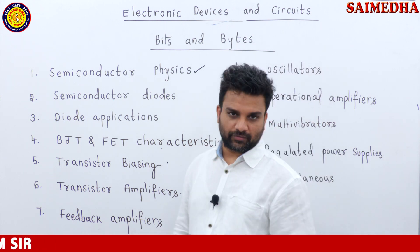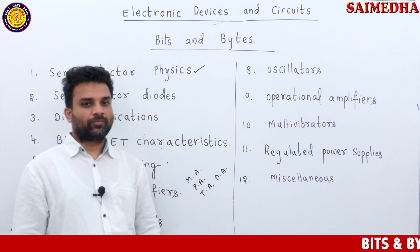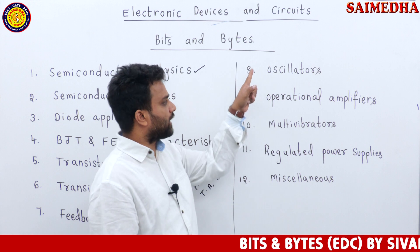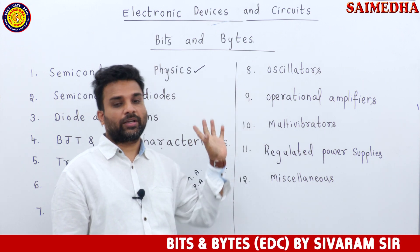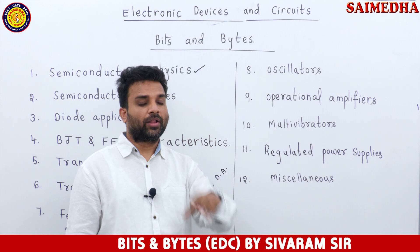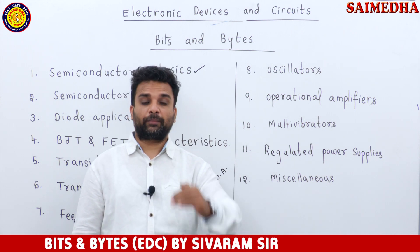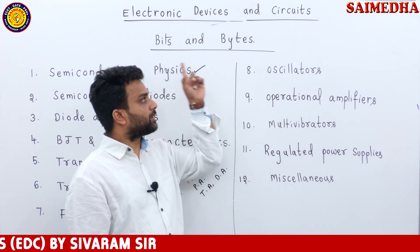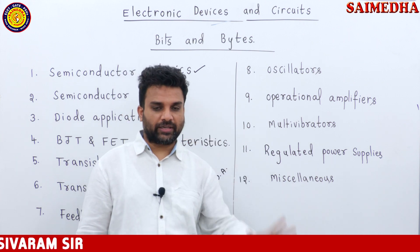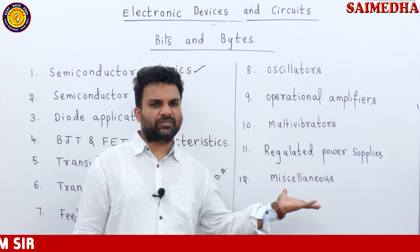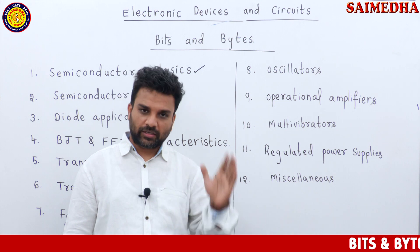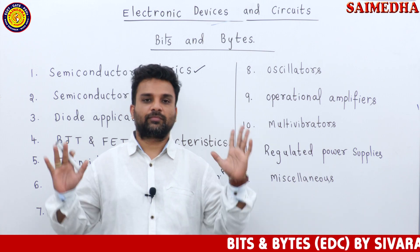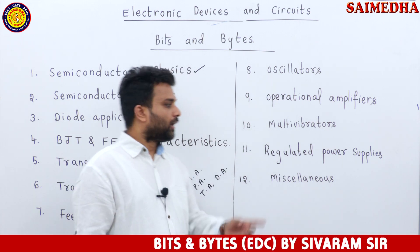Once feedback amplifiers are done, Unit 8 covers oscillators. Feedback amplifiers use negative feedback, while oscillators use positive feedback — there are many applications and this is very important content at diploma level for jobs and interviews. After six to eight hours of this video series, you gain knowledge in Bits and Bytes and you will be able to answer these questions confidently.